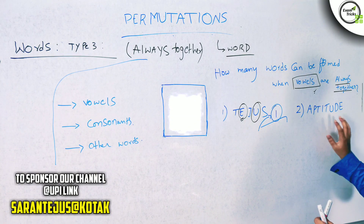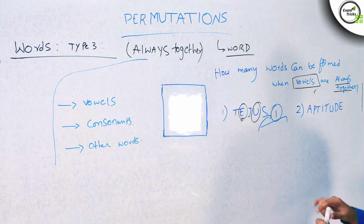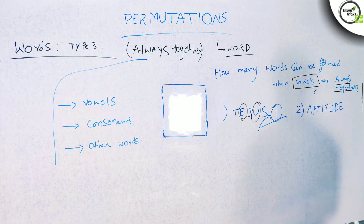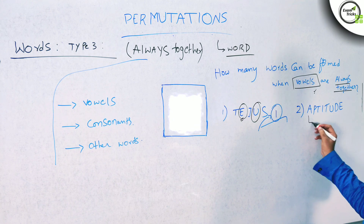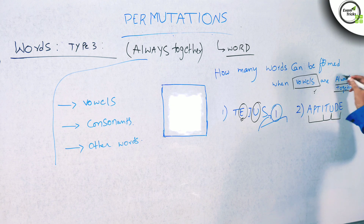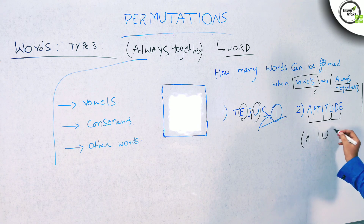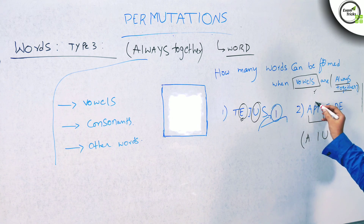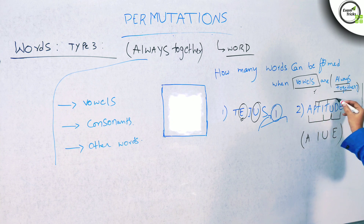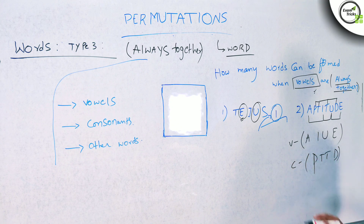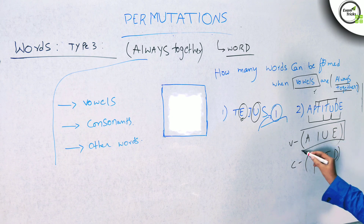This question is aptitude. There are 8 letters in total. The vowels are A, I, U, E — four vowels. The consonants are P, T, T, D. Now, when the vowels are always together, let me show you one block. You have P, T, T, D — four consonants — plus one vowel block, giving five units total.